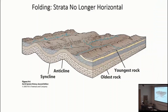This tilting happens because of folding. When the rocks are under burial and you've got pressure fields, they can bend, and subsequently erosion exposes these bent surfaces.